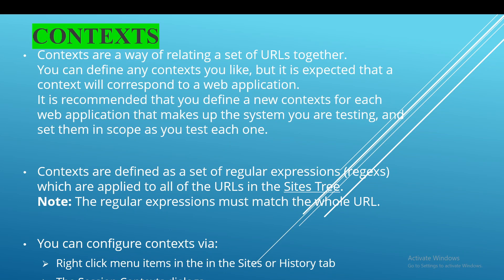It is recommended that you define a new context for each web application that makes up the system you are testing, and set them in scope as you test each one. So it is the way of relating your testing web application — that means it's grouping our web applications which are under testing. Context will help to group a set of URLs, defined as regular expressions applied to all the URLs in the site tree.